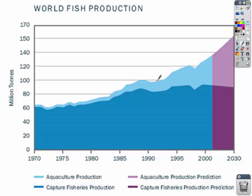The line that's increasing is ocean production through something called aquaculture — the farming of fish. The darker blue line that was increasing for a long time through the 70s and 80s, and into the 90s and 2000s, is now on a decline.